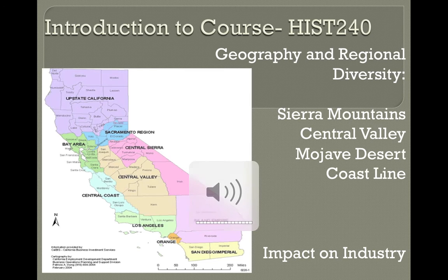Thus, major developments such as European contact will not occur in California until the late 1700s, as compared to South America being colonized in the 1500s and the eastern seaboard being colonized and settled in the early 1600s.